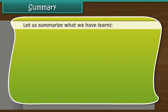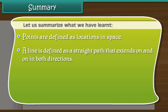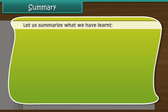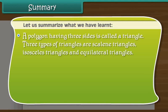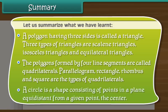Let us summarize what we have learned. Points are defined as locations in space. A line is defined as a straight path that extends on and on in both directions. An angle whose measure is 90 degrees is called a right angle. Angles measuring less than 90 degrees are acute angles and those which measure more than 90 degrees are obtuse angles. A polygon having three sides is called a triangle. Three types of triangles are scalene triangles, isosceles triangles, and equilateral triangles. The polygons formed by four line segments are called quadrilaterals. Parallelogram, rectangle, rhombus, and square are the types of quadrilaterals. A circle is a shape consisting of points in a plane equidistant from a given point, the center.